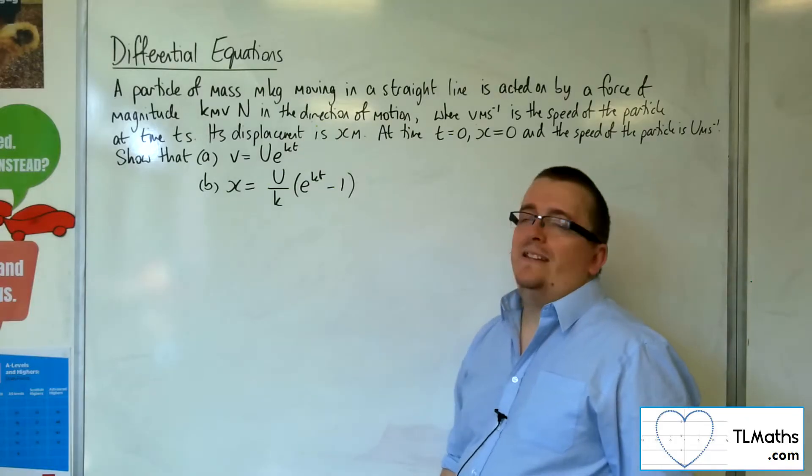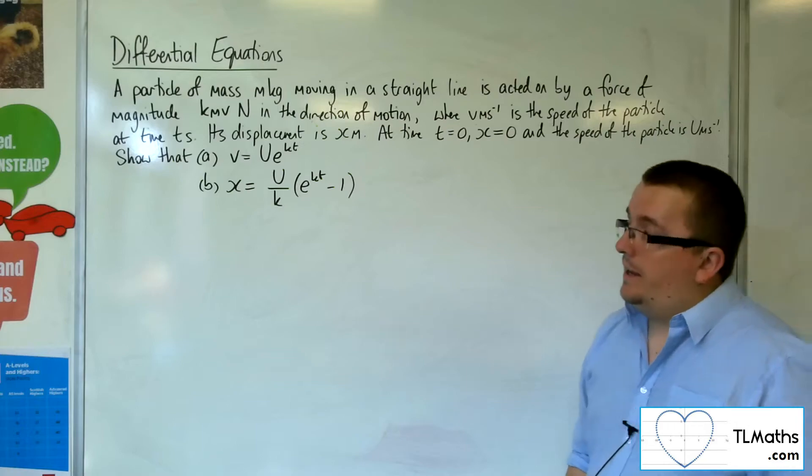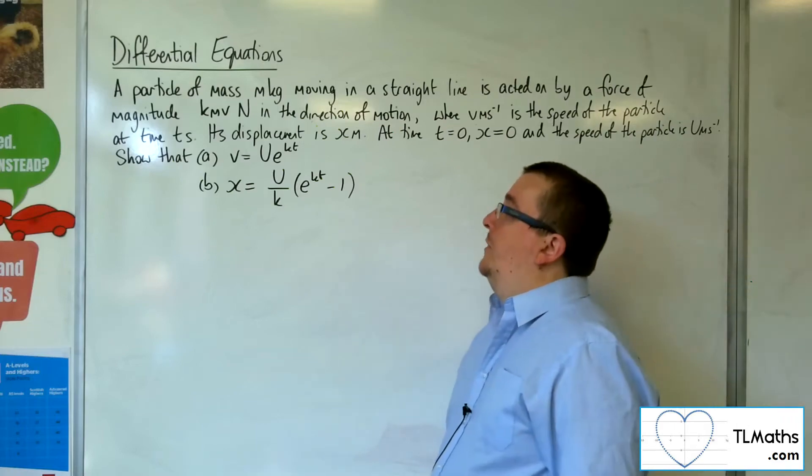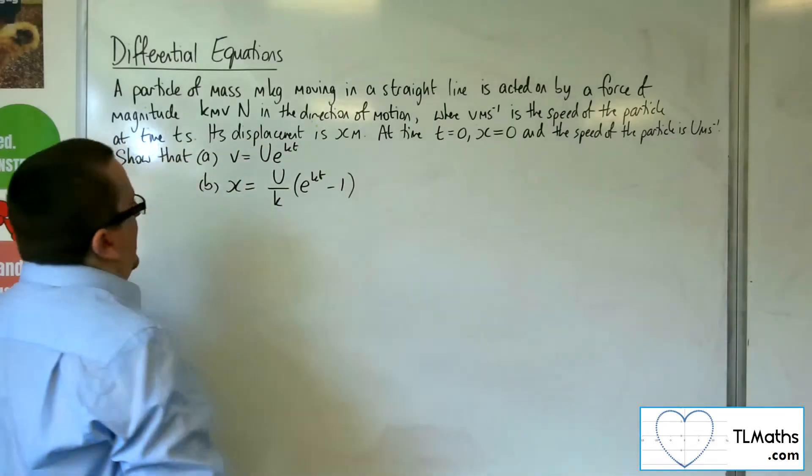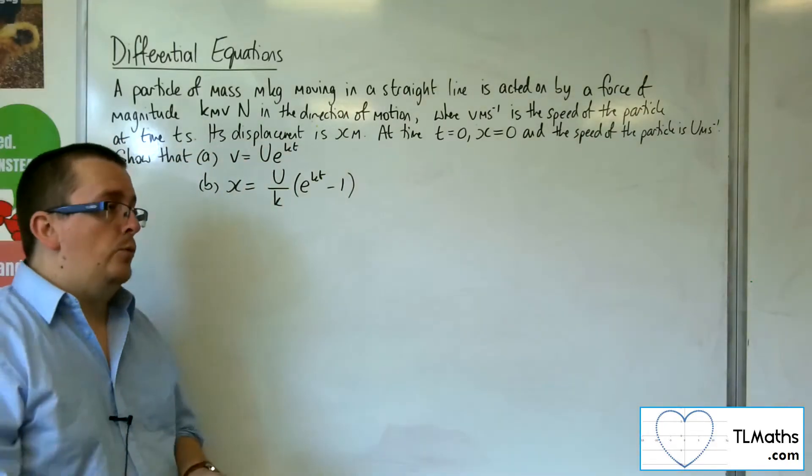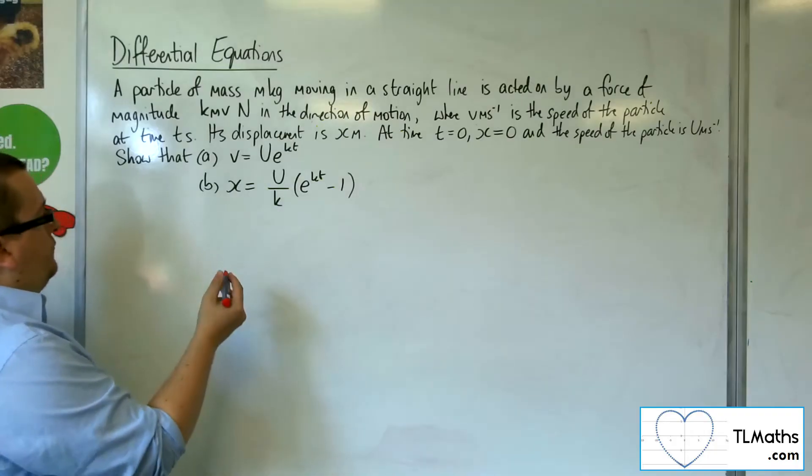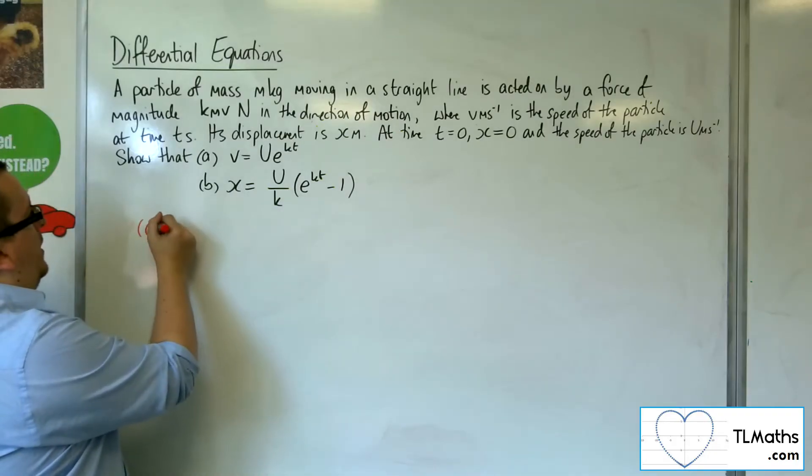and the speed of the particle is u meters per second. Show that (a) v equals ue to the kt, and (b) x equals u over k times e to the kt minus one. So lots of letters here. We're generalizing this. Let's have a look at part a.